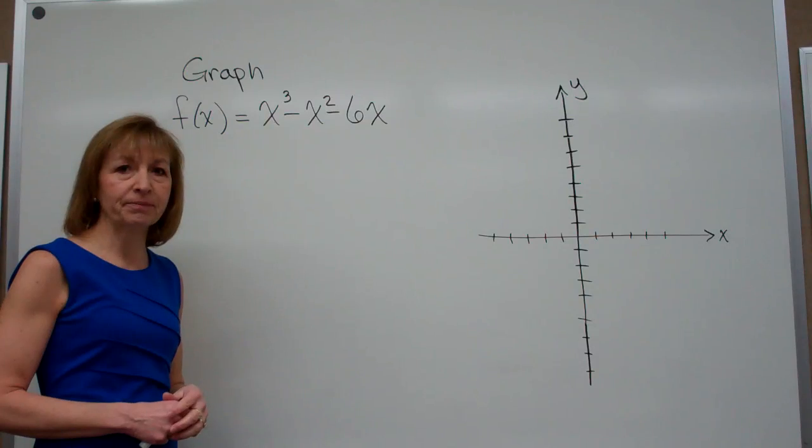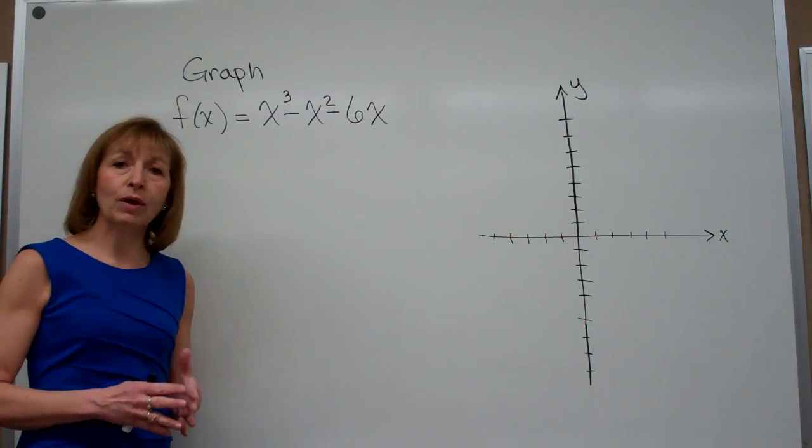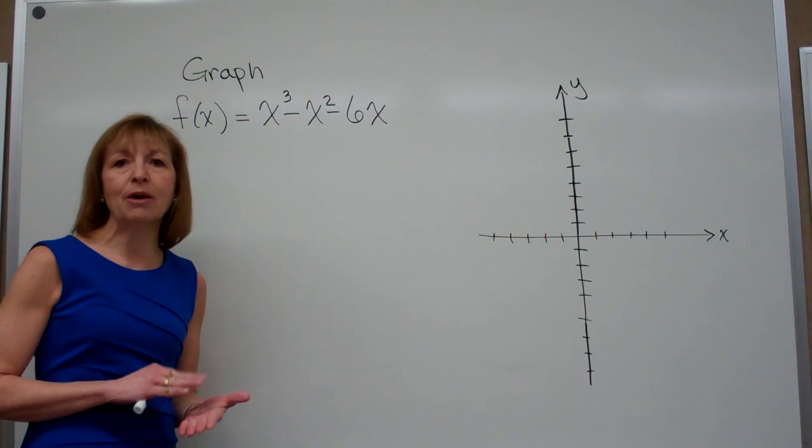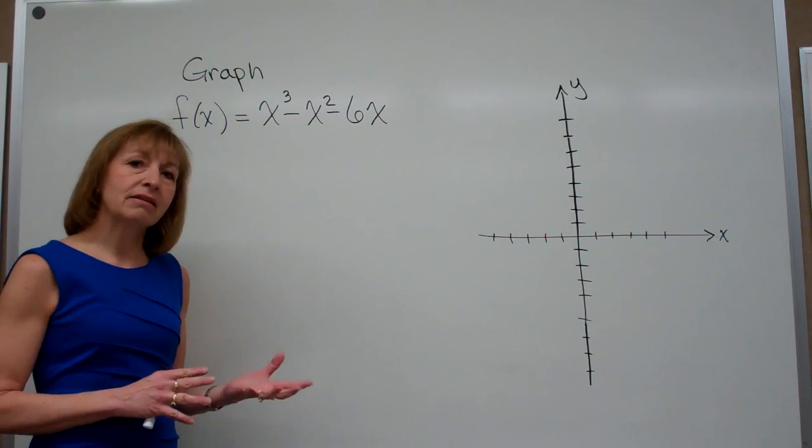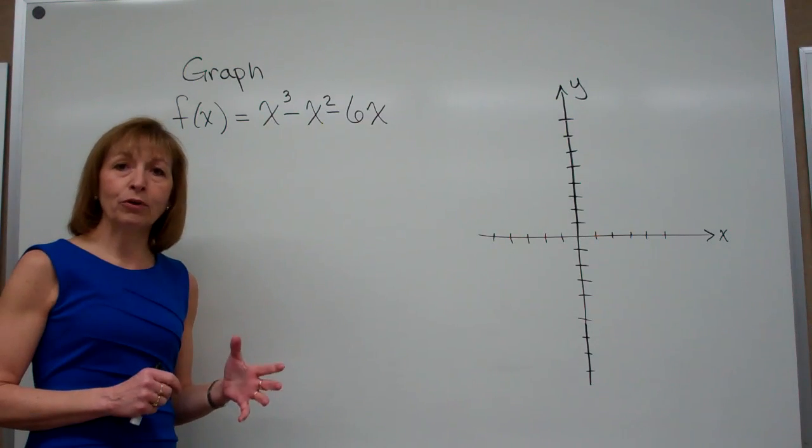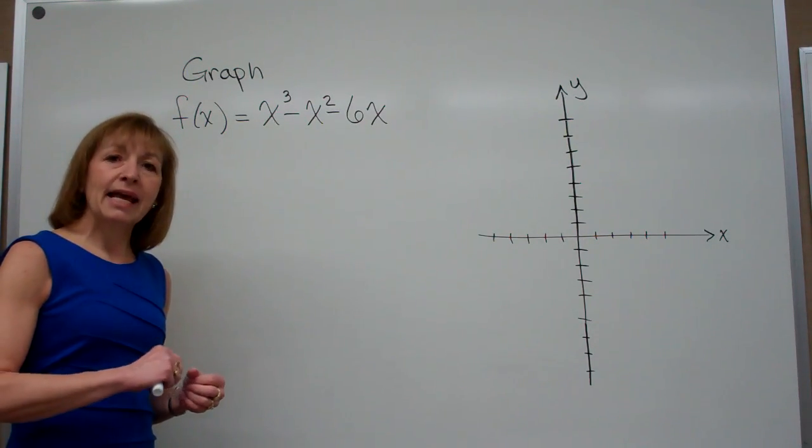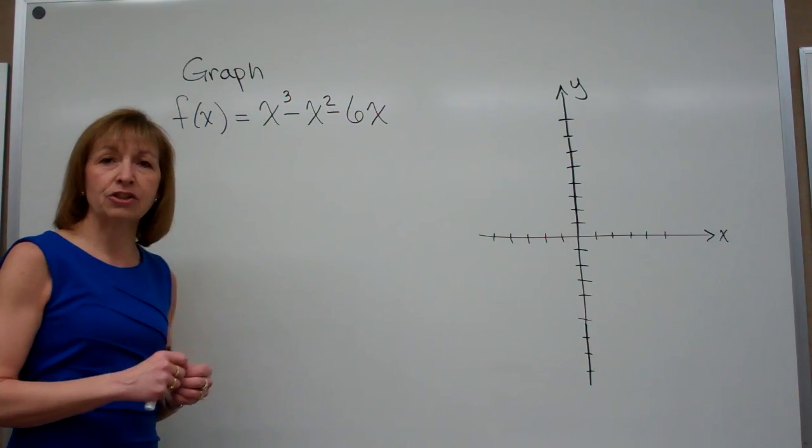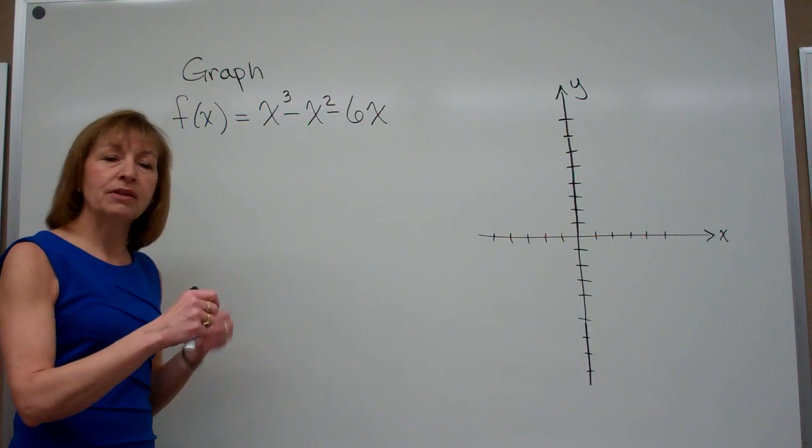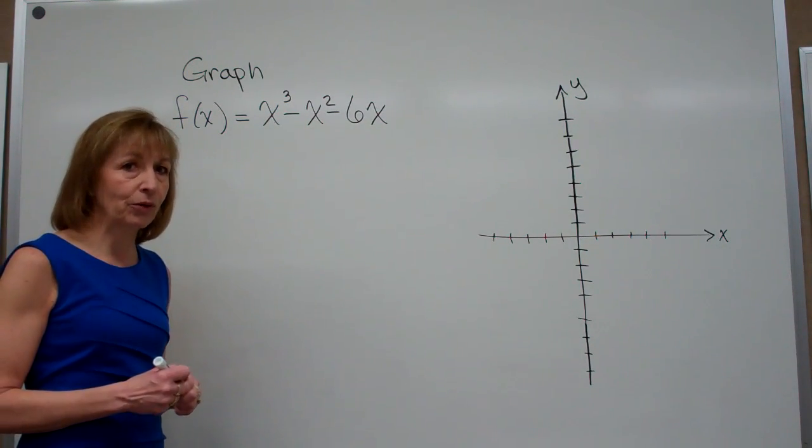Now the thing that makes these really nice to graph is that once we find the x-intercepts, the y-intercepts, and some end behavior, and just a few more ordered pairs that make the function true, then we can go ahead and draw our curve in a nice, smooth way, making transitions very nice without making sharp corners, because that's the way that a polynomial works.